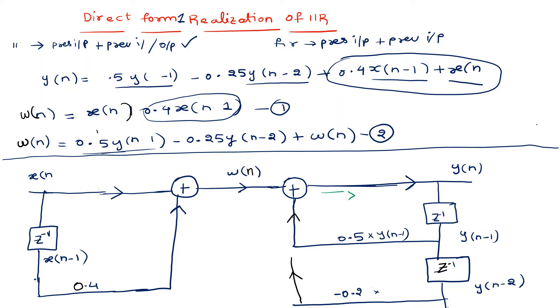This has minus 0.25, so it already has y(n-2), and it will add to the summer. So mainly these two branches are adding, if you observe carefully.